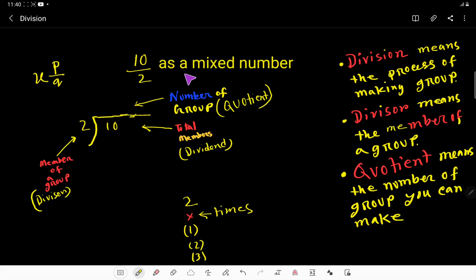Well, 10 over 2 as a mixed number. Okay, what do you mean by mixed number? A mixed number is that number where we get a whole number part and fractional part. Here x is a whole number and p by q is a fraction. P is the numerator and q is the denominator.